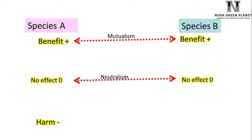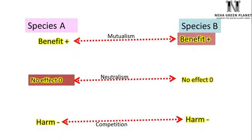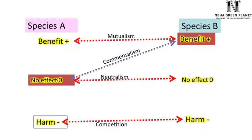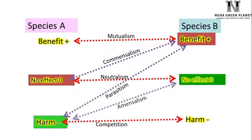If species A gets harmed and species B is also harmed, then the interaction is generally competition. If species A is unaffected but species B is benefited, then the interaction is called commensalism. If species A is harmed and species B is benefited, this kind of interaction is known as parasitism. If species A is harmed and species B remains unaffected, then the type of interaction is called amensalism.